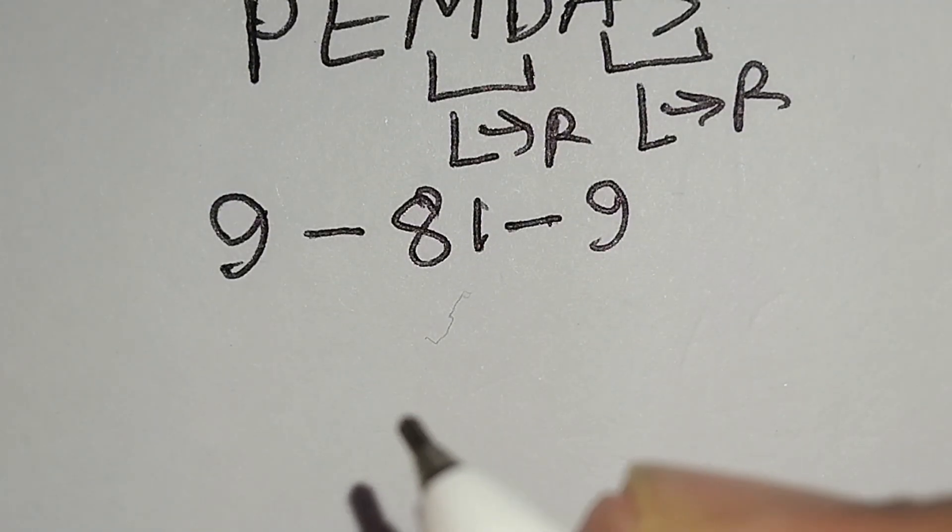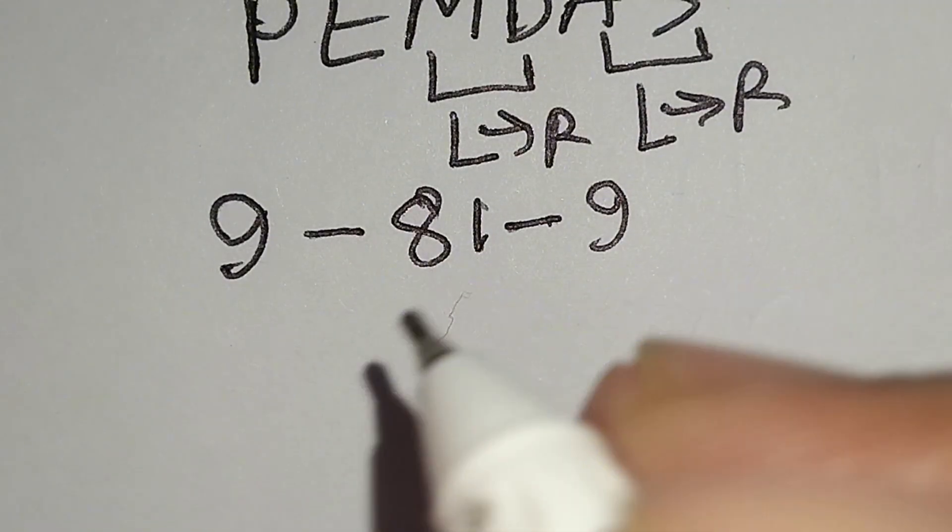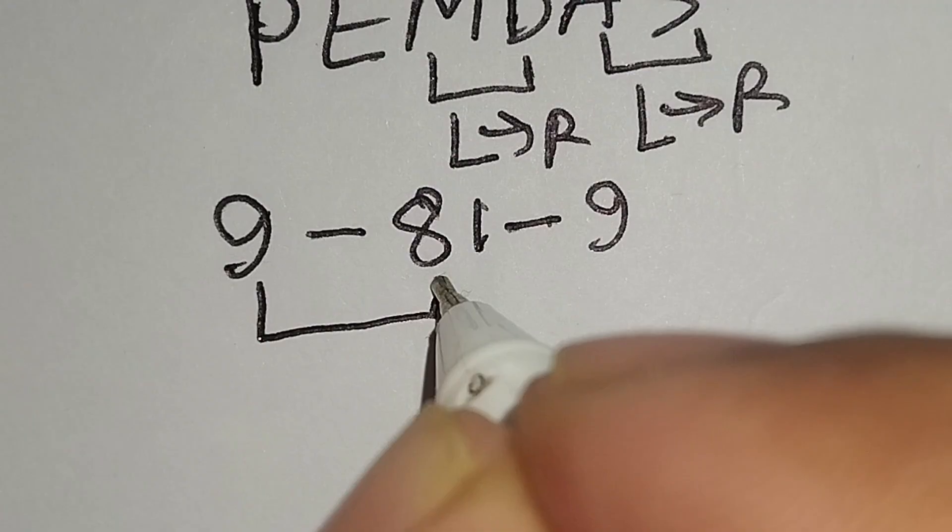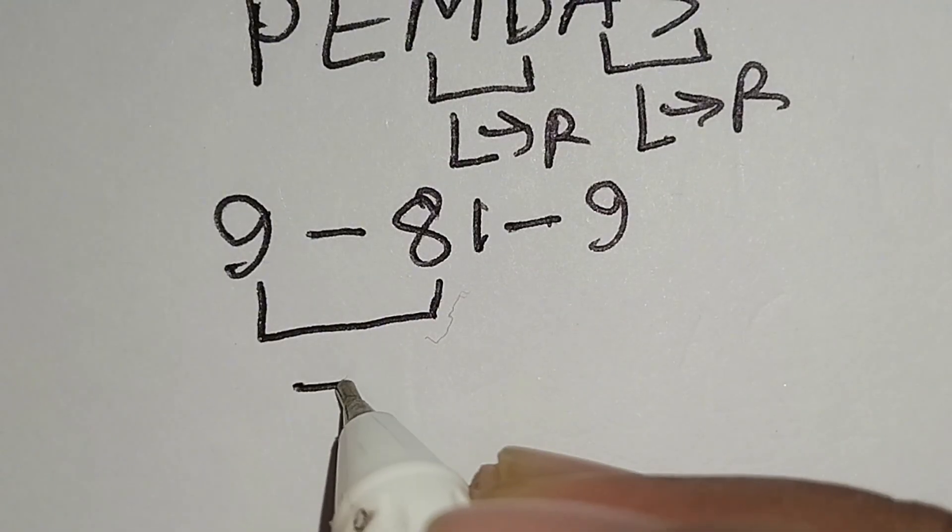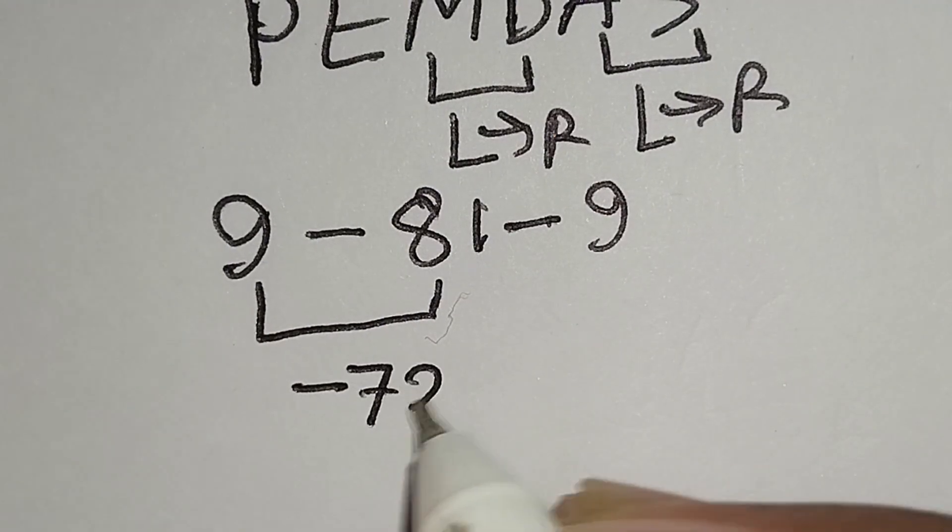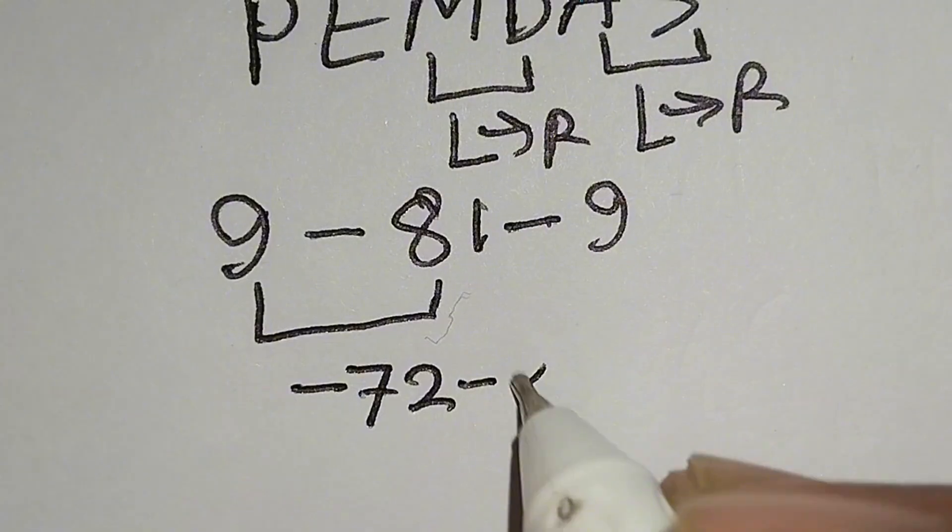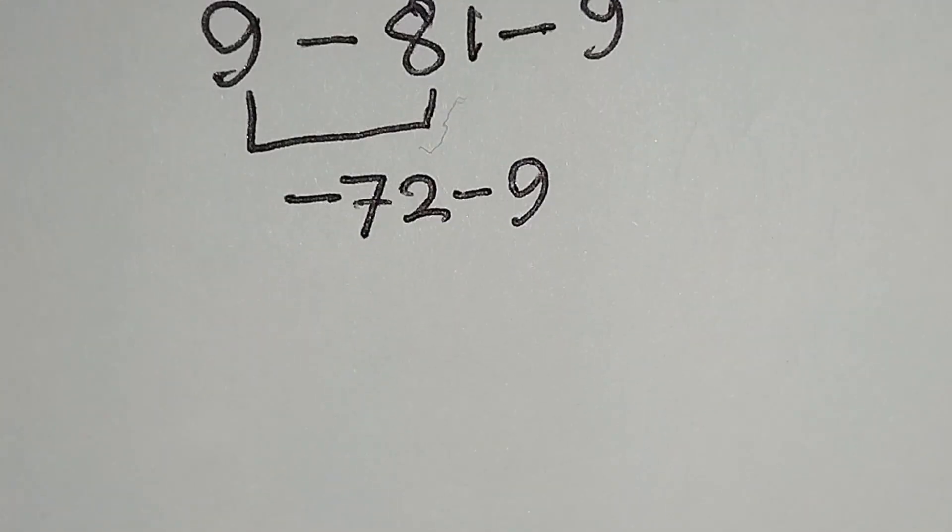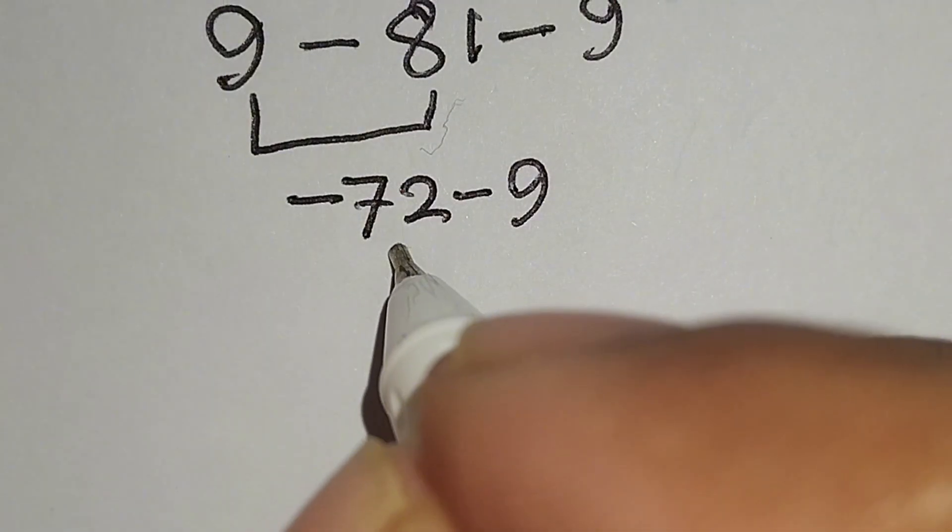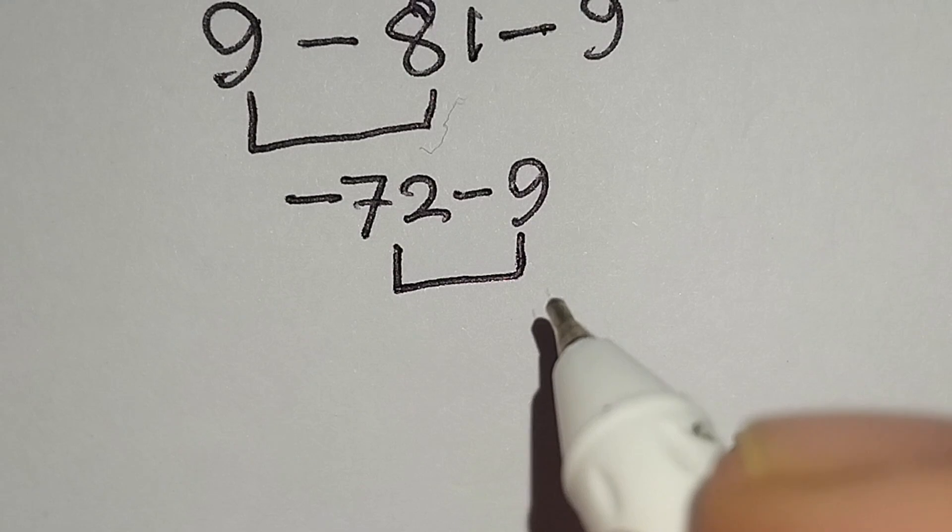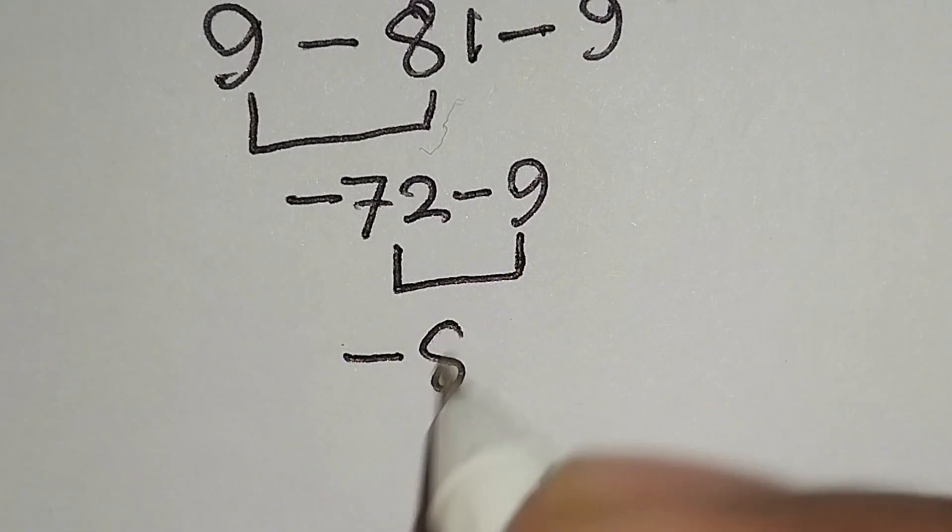Now I have to work with this subtraction. Here 9 minus 81 gives us minus 72 minus this 9. Minus 72 minus 9 gives us minus 81.